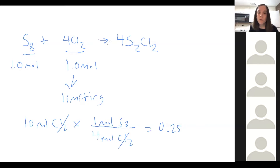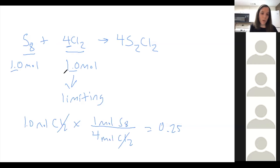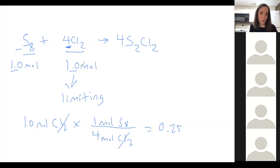A student asks: is it always the larger coefficient that's going to be limiting? That's a good question — not necessarily. If we have equal amounts of moles, then yes. But we could have, say, eight moles of Cl2 and one mole of S8, in which case S8 would be limiting. So it doesn't always follow that the larger coefficient means that reactant is limiting. It depends on the mole ratio from the equation as well as the amounts given in the problem.